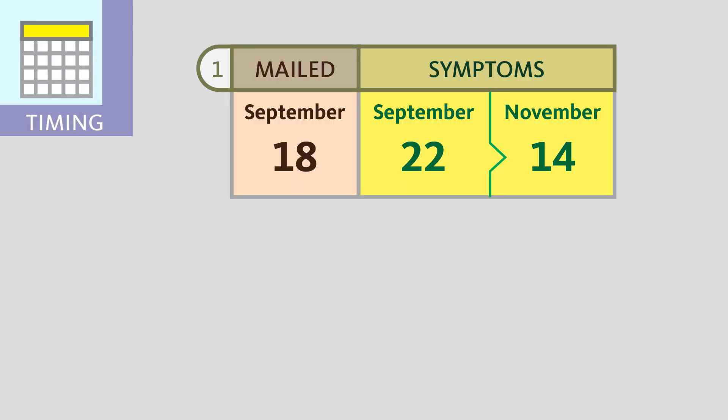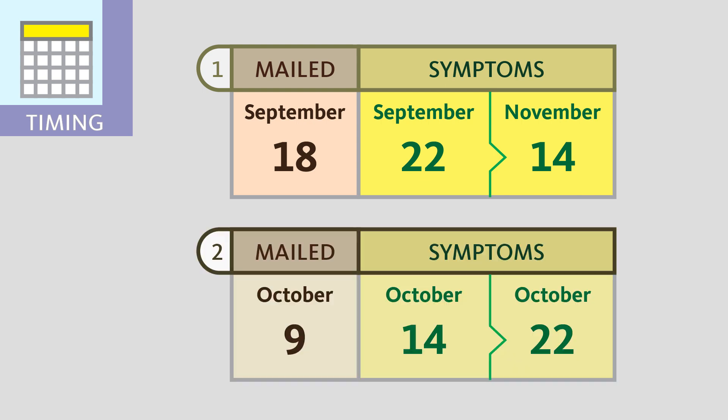Finally, timing. The first cluster of cases occurred four days after letters were mailed on September 18, 2001. Onset of symptoms for this cluster occurred from September 22, 2001 to November 14, 2001. The second cluster of cases occurred five days after the letters were mailed on October 9, 2001. Onset of symptoms for the second cluster occurred from October 14 to October 22.